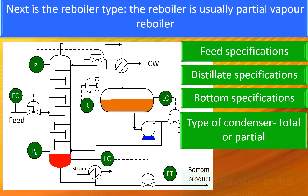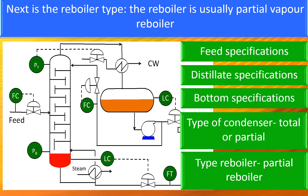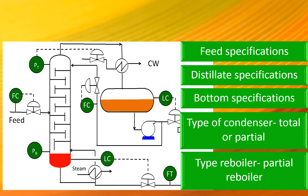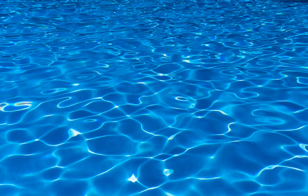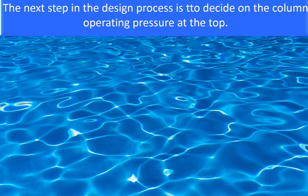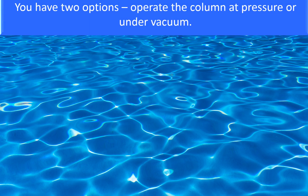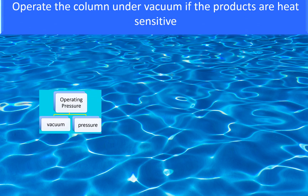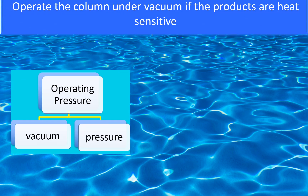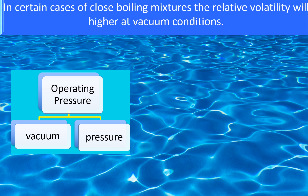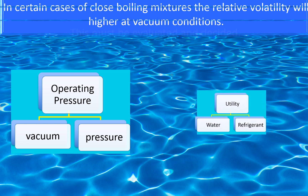Next is reboiler type. The reboiler is usually a partial vapor reboiler. The next step in the design process is to decide on the column operating pressure at the top. You have two options: operate the column at pressure or under vacuum. Operate the column under vacuum if the products are heat sensitive. In certain cases of close boiling mixtures, the relative volatility will be higher at vacuum conditions.